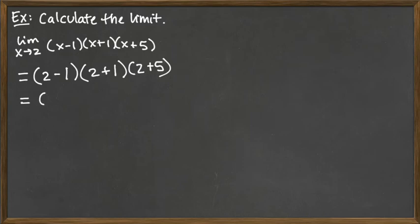So we have 2 minus 1 is 1, 2 plus 1 is 3, and 2 plus 5 is 7. So we're looking at 1 times 3 times 7. So that would be 21 for our final answer.